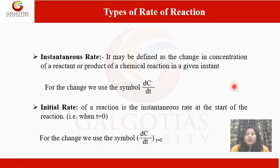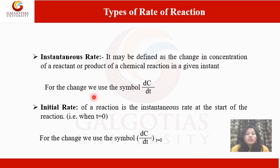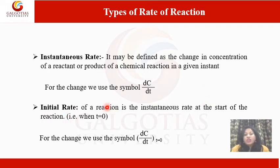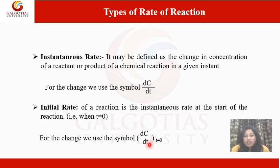Instantaneous rate is defined as the change in concentration of reactant or product at a given instant, using the symbol d (differential). Formula: dC/dt. Initial rate of a reaction is the instantaneous rate at the start of the reaction, that is when t = 0. For that, we use dC/dt when T = 0.